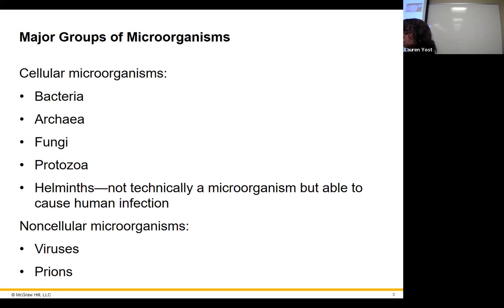Fungi include mushrooms, penicillin-producing molds, and yeast. Don't forget that yeast falls into fungi — there are many different kinds beyond just Candida albicans. Protozoa are eukaryotic cells; examples include malaria and Toxoplasma gondii, which you can get from handling cat litter when pregnant.